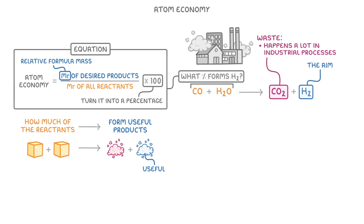As the aim of this reaction is to create hydrogen, that's our desired product, and its MR would be 2 times 1, so 2. For our reactants, we have carbon monoxide, which has an MR of 28, and water, which has an MR of 18. So to get the total MR of all our reactants, we just add 28 and 18 together to get 46.